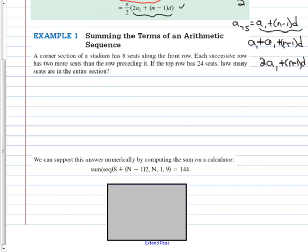Let's try this one. A corner section of a stadium has 8 seats on the front row, and each successive row has two more seats: 8, 10, 12, 14. If the top row has 24 seats, how many are there total in that entire section? First row is 8, last row is 24, two more each time.